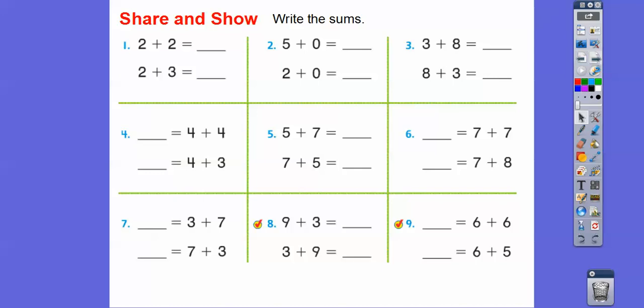So just some tricks on how to add. Let's write the sums here. So 2 + 2, well, that equals 4. Those are doubles from our last lesson. And 2 + 3 is one more than that, so 5. 5 + 0, well, anything plus zero is just the number. And then 2 + 0 is also just 2.